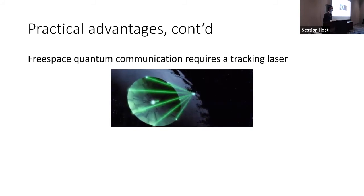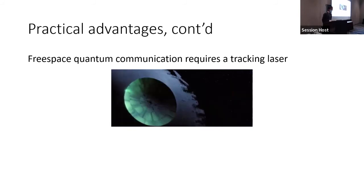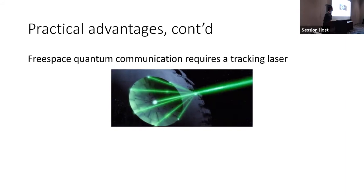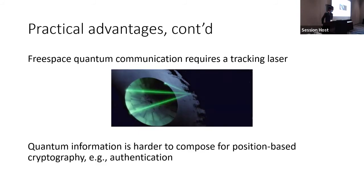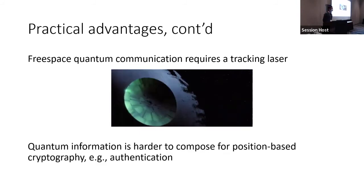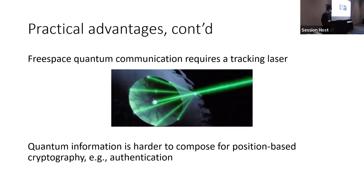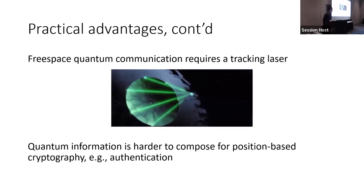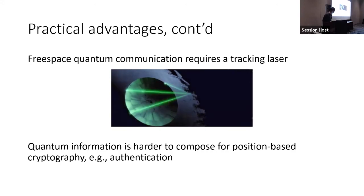In practice, people doing free-space QKD use a tracking laser to minimize loss, but this expensive equipment is unnecessary for classical communication. Furthermore, classical communication is more composable — for position-based cryptography, authentication of messages is much easier or even trivial.